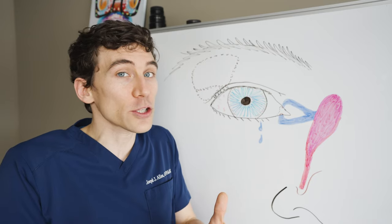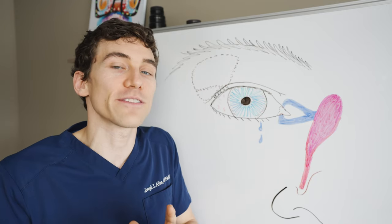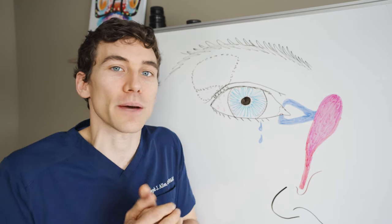With somebody with an ectropion, typically we do need to refer that for surgery repair. Otherwise, for conjunctival chalasis, we can try conservative treatment by reducing the inflammation on the eye, trying to get that conge to kind of tighten up on its own.